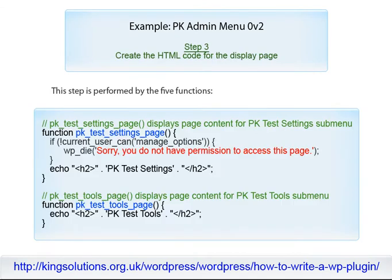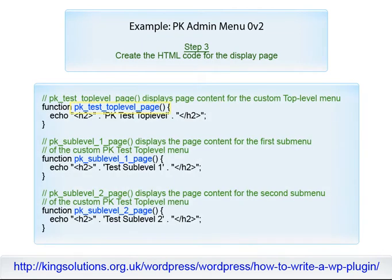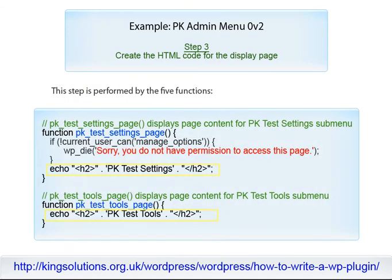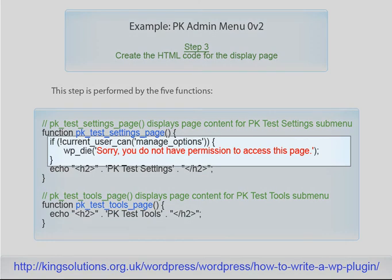In step 3 we create the HTML code for the pages to be displayed when menu items are clicked. This step is actioned by the five functions: PK_test_settings_page, PK_test_tools_page, PK_test_top_level_page, PK_sublevel1_page, and PK_sublevel2_page. In this example we simply output the menu name in HTML on each options page. There is a point worth noting here: each function should always check to see if the user has permission to view each of the options pages before doing anything else.